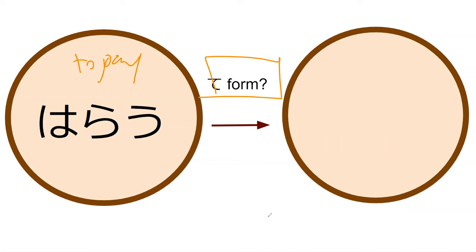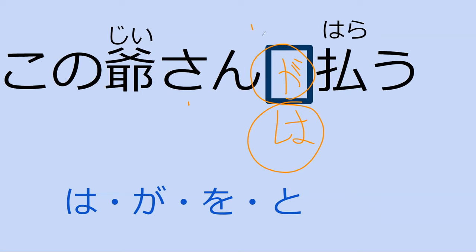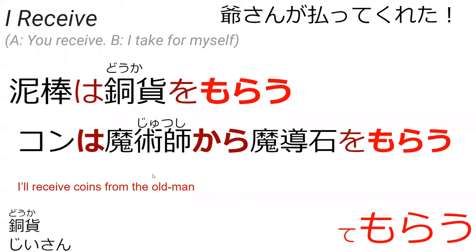What do you think the te-form of harau is? To pay — harau — this is an u-verb, so it's harai... harate. Perfect — harate. Now I want this to be the old man pays — what particle would we use? He's doing the paying, so kono ojii-san ga harau. You can definitely do that. You could also do wa. Both will show up — it just depends if you want to make it really obvious it's the old man who's going to pay — that's when you use ga — and if you're just making a general statement, you'd use wa.